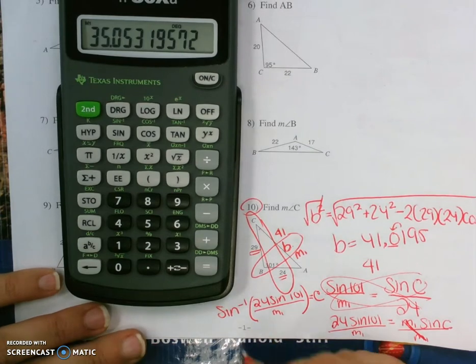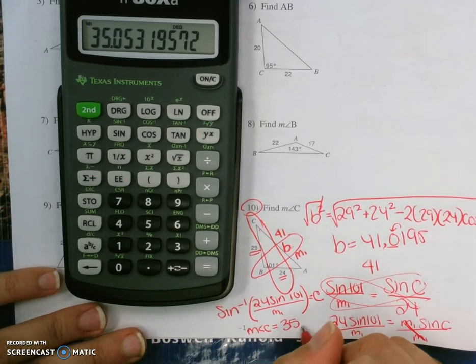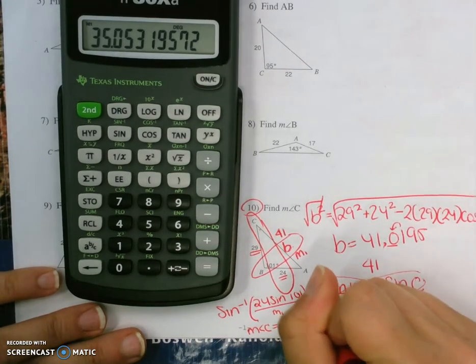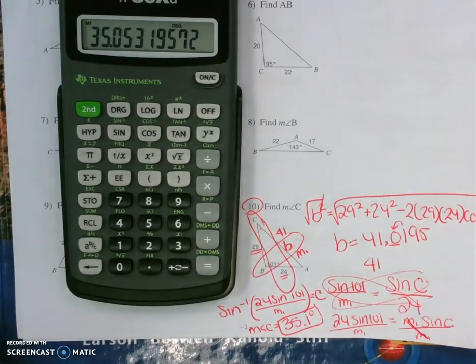So angle C, the measure of angle C is going to be approximately 35.1 degrees, because the zero becomes a one because the five bounces it up. And that is number 10. Let's try another one.